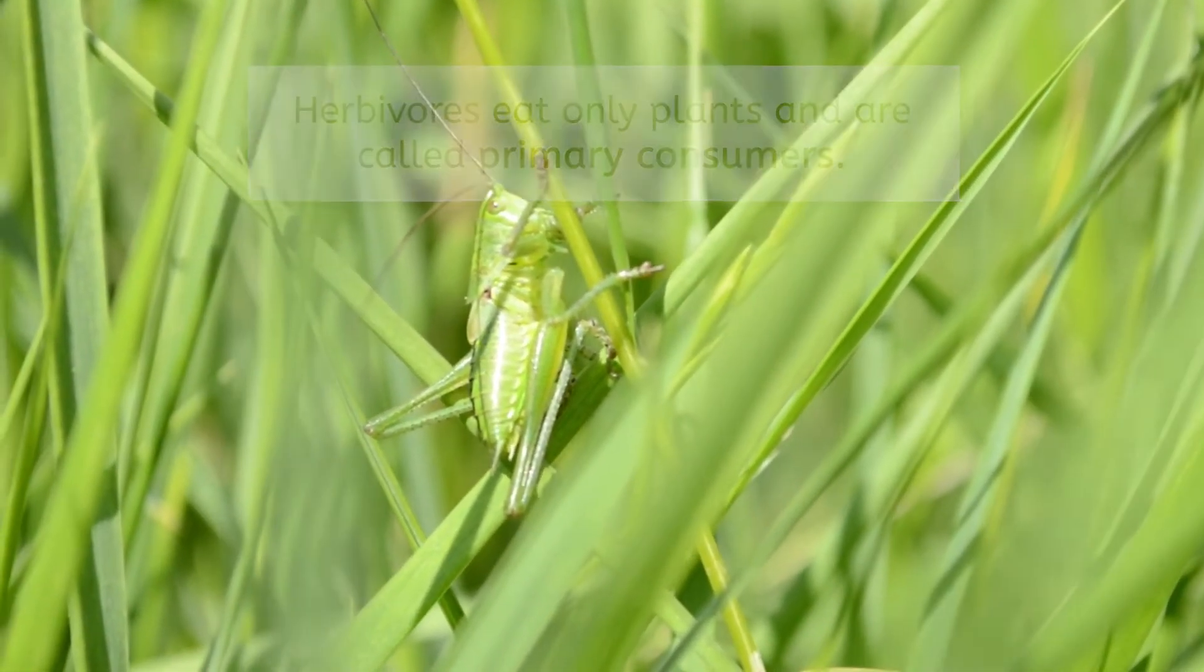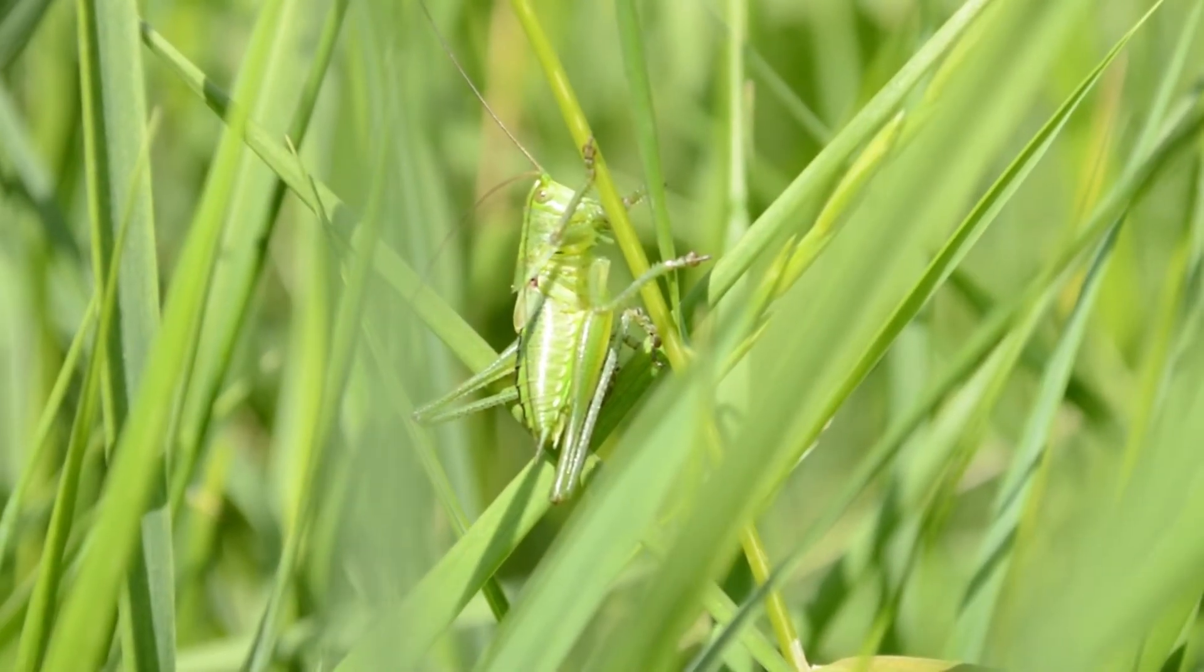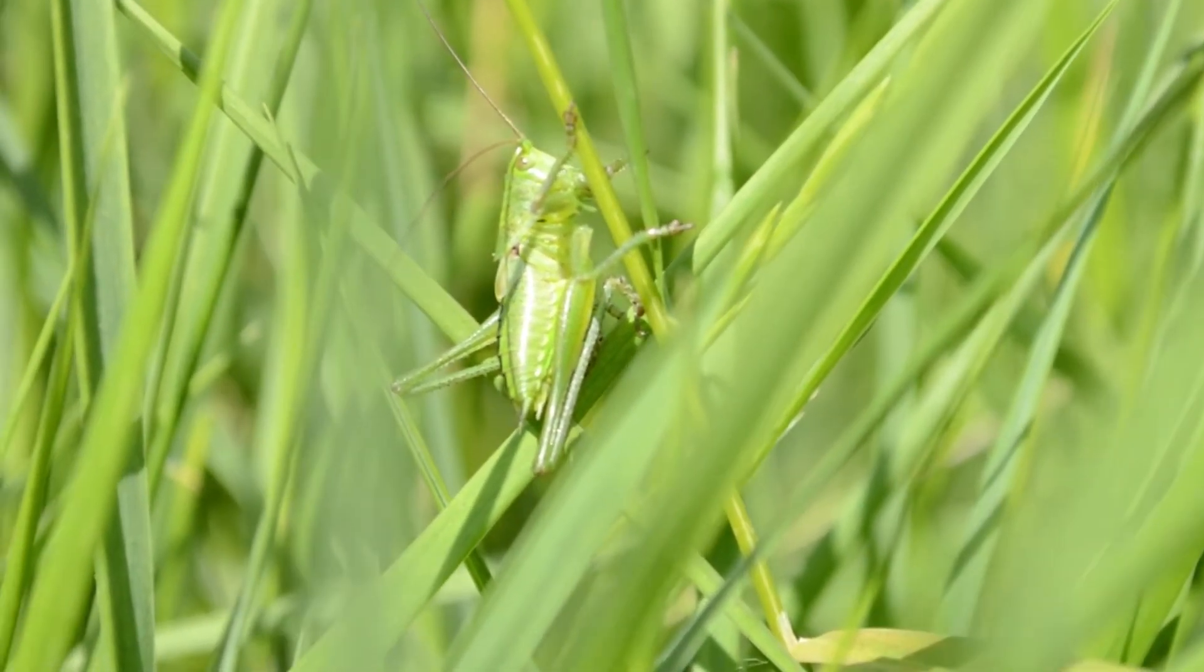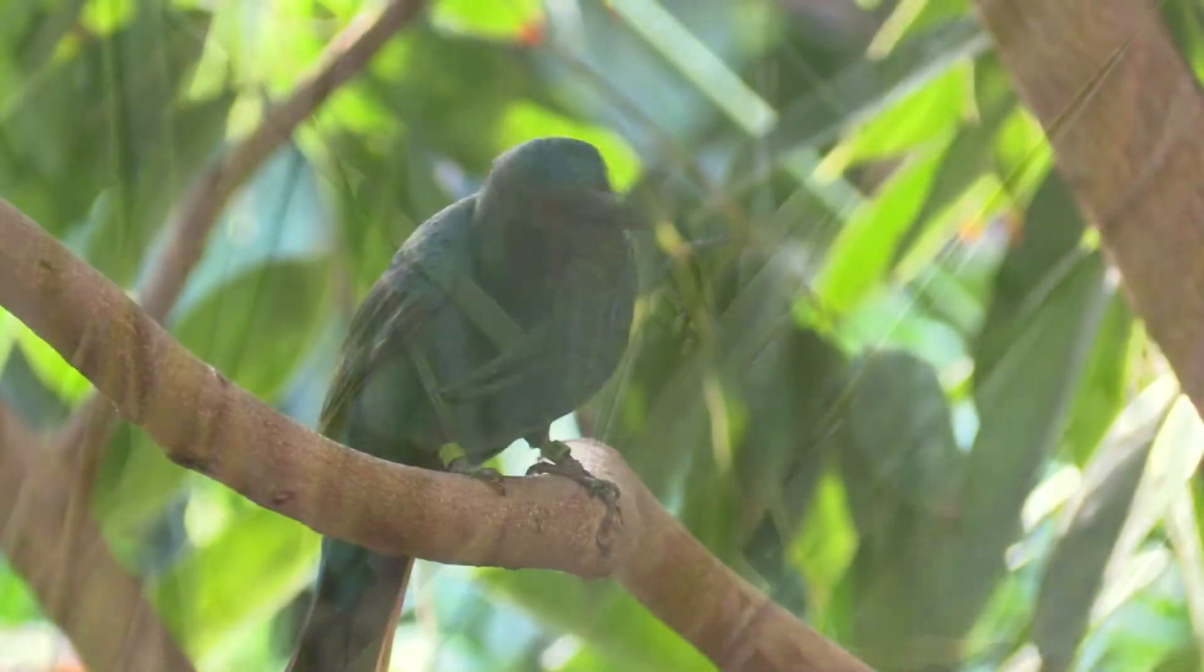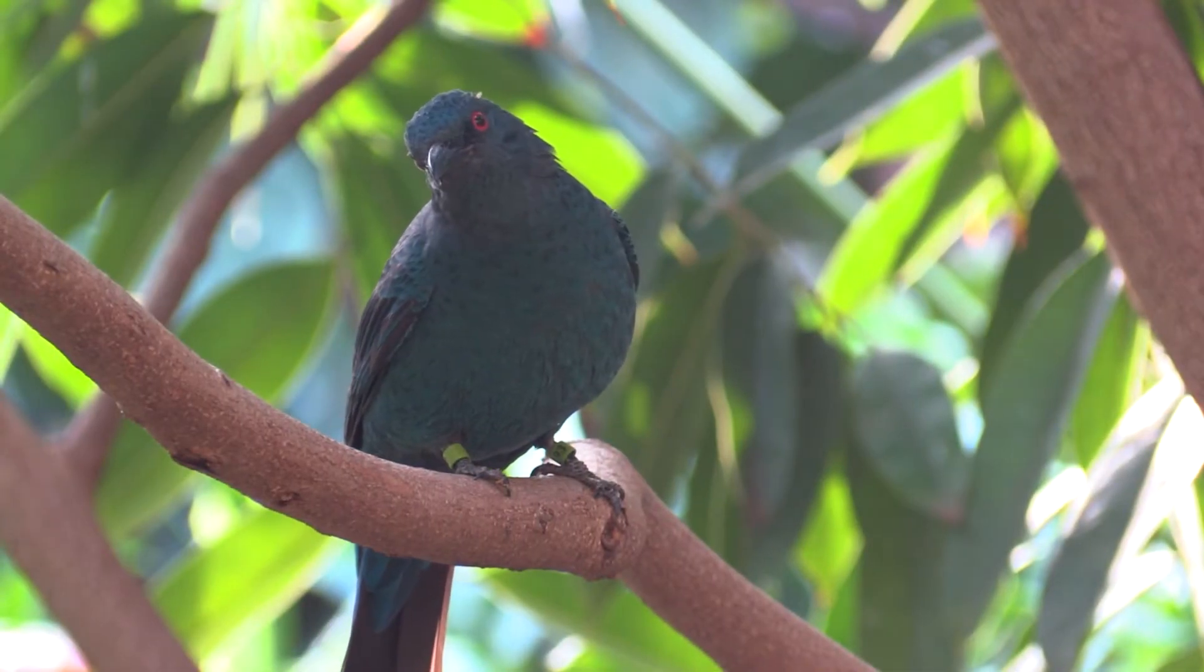In this case, the grasshopper is nibbling on the long grains of grass, getting nutrients from the plant. Oh no! That grasshopper better keep an eye out! It looks like that bird is hungry!